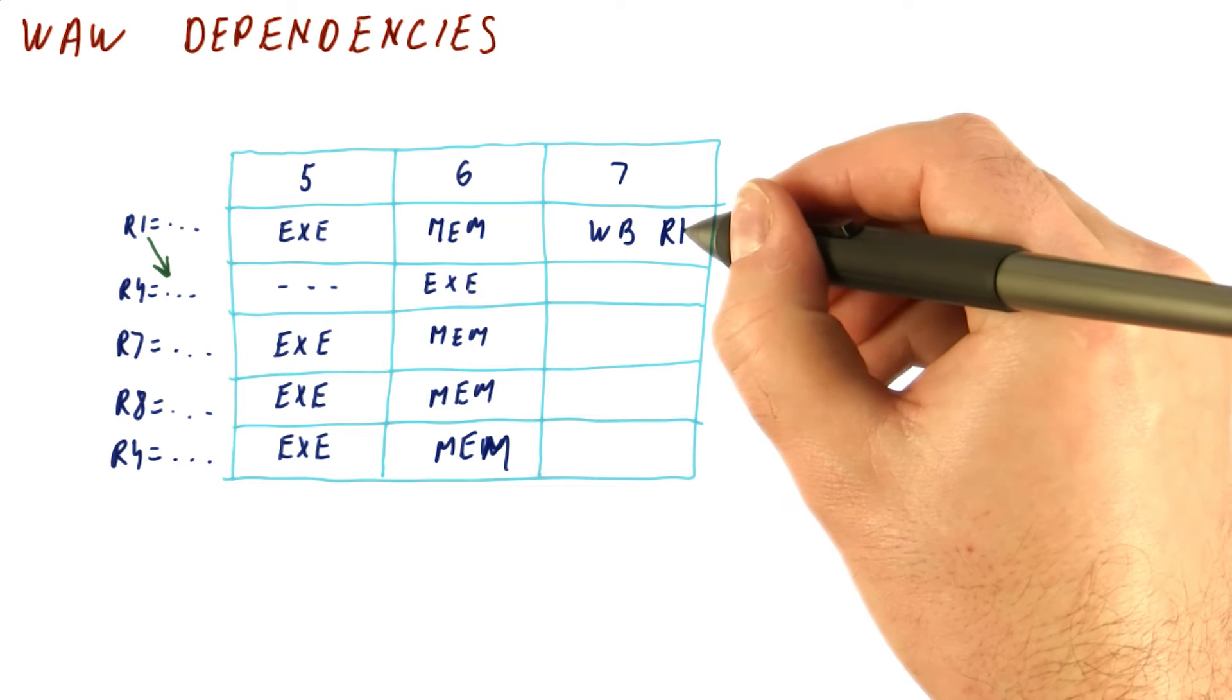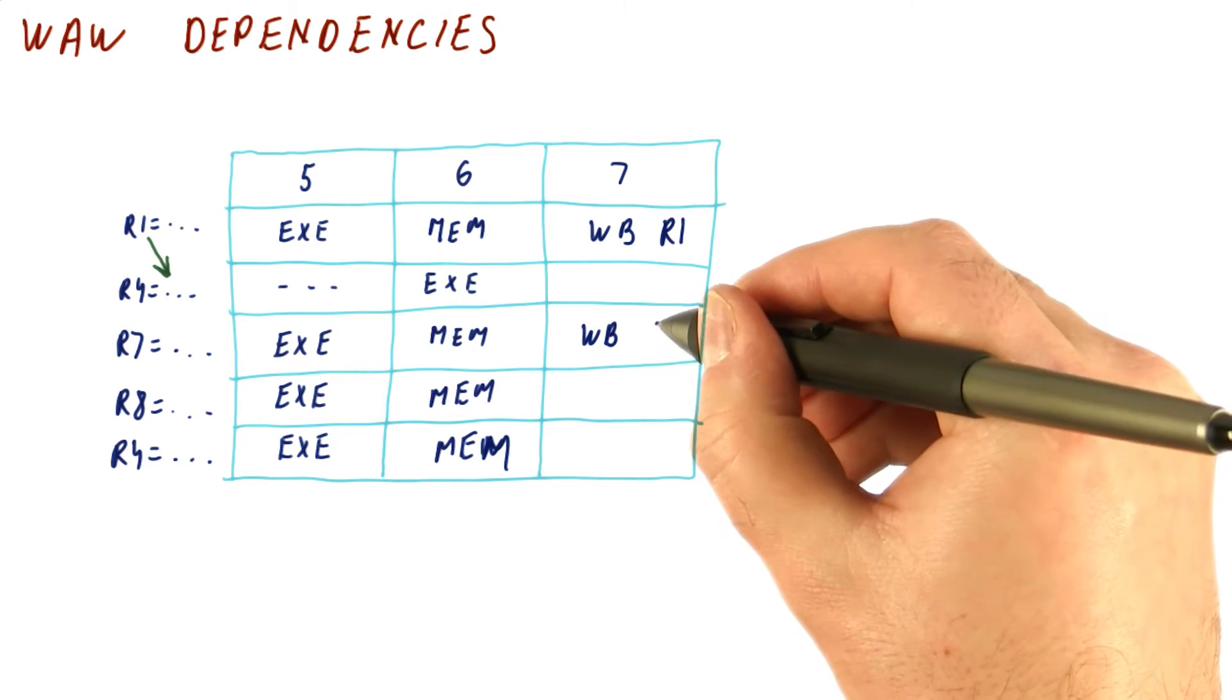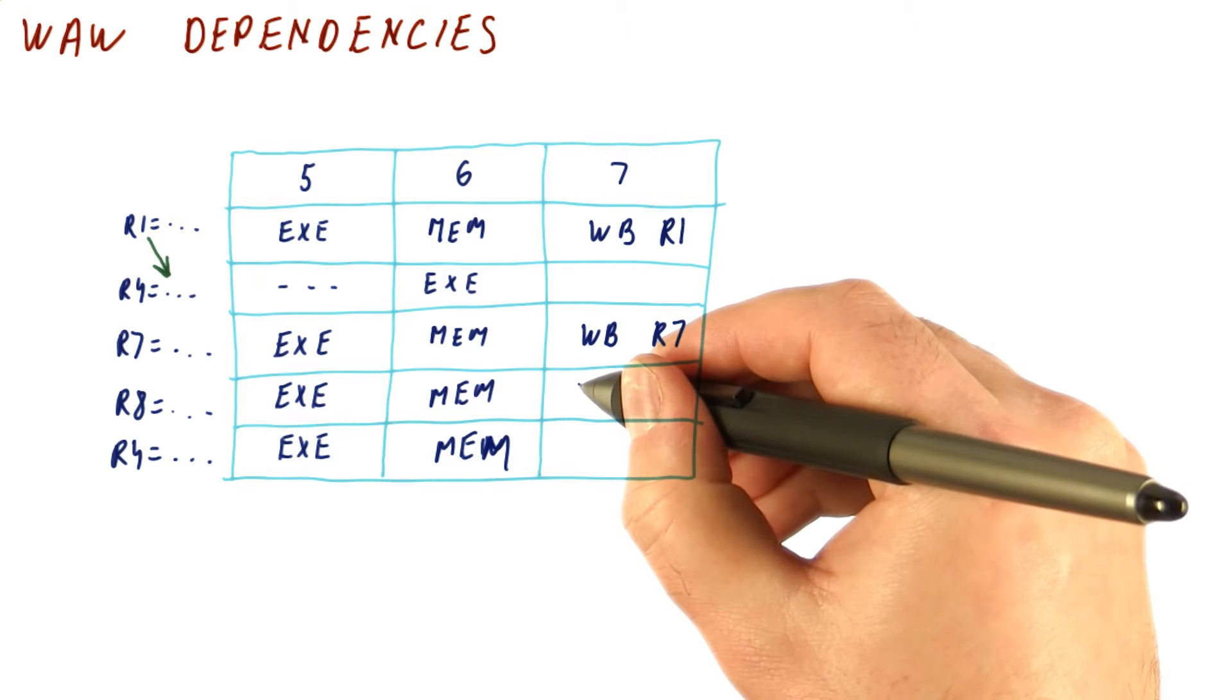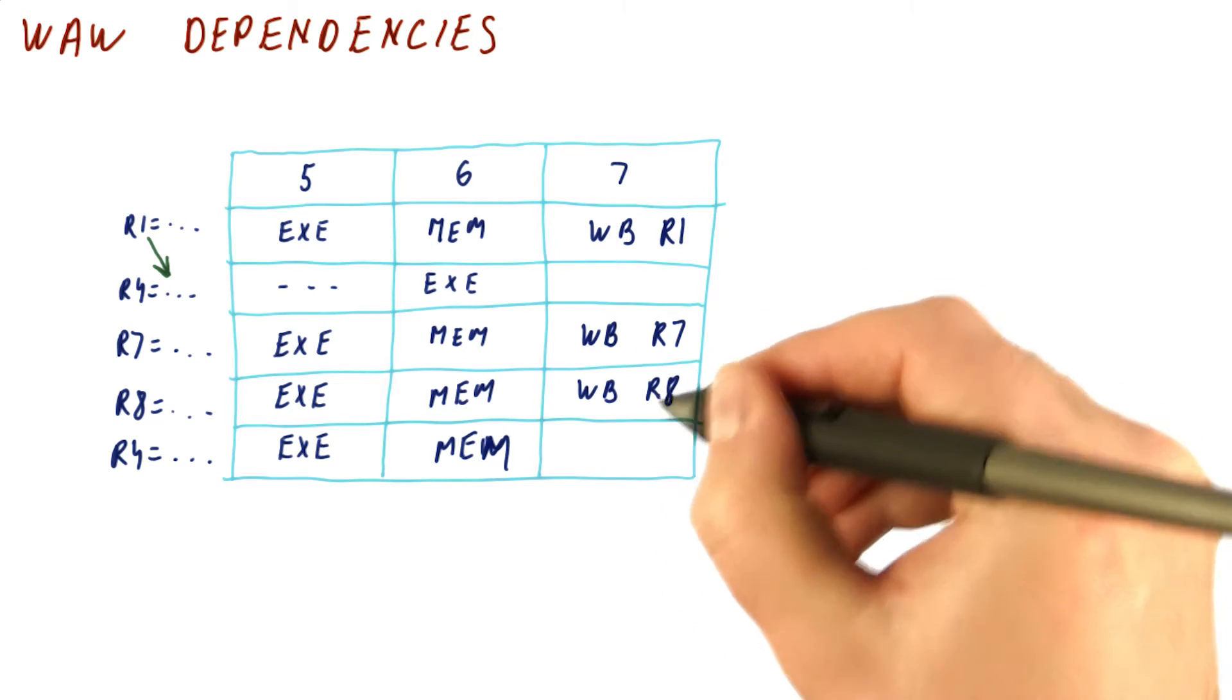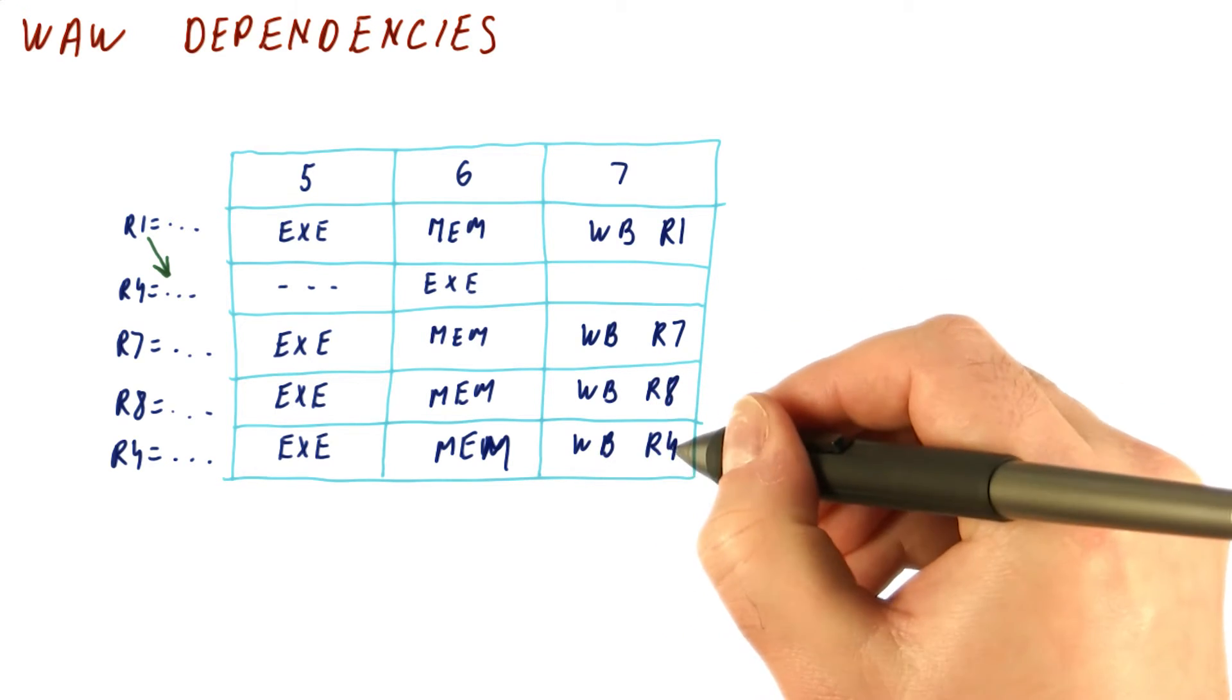So now R1 gets written. Then this instruction is also going to write its result, so R7 is going to be written. This one writes R8, and this one writes R4.